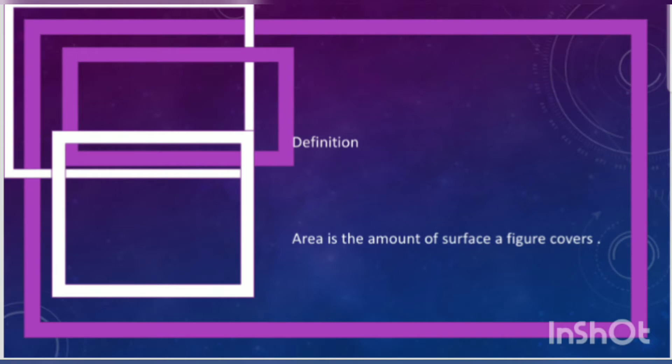Surface means a plain smooth place. Now if we check a mobile, if we keep it on our square lined book, then we have to check how many squares are in it. That will be the area of our mobile.